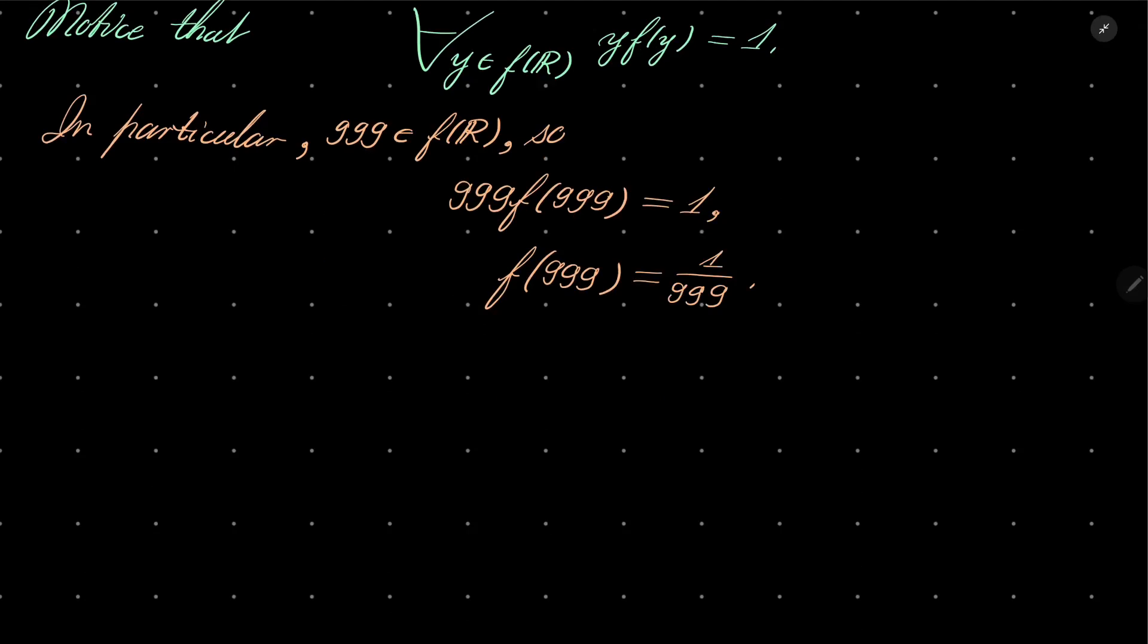In particular, we see that this number is also in the range of our function. So 1 over 999 is also in the range, the image of our function.